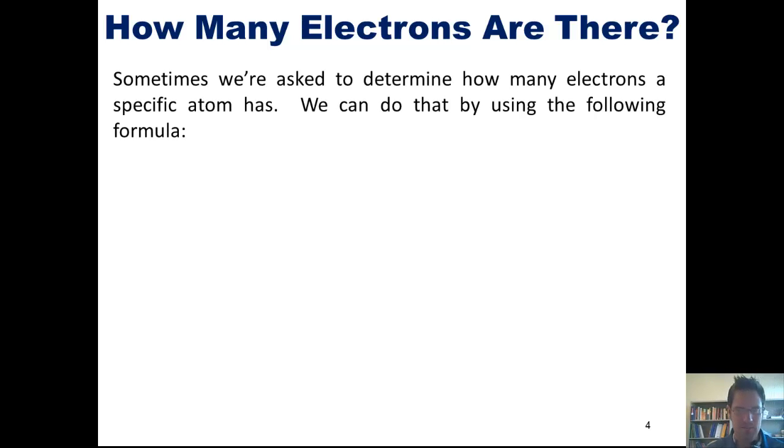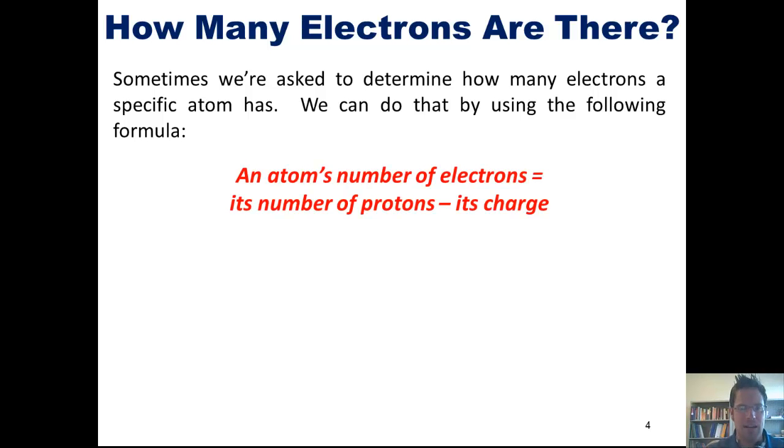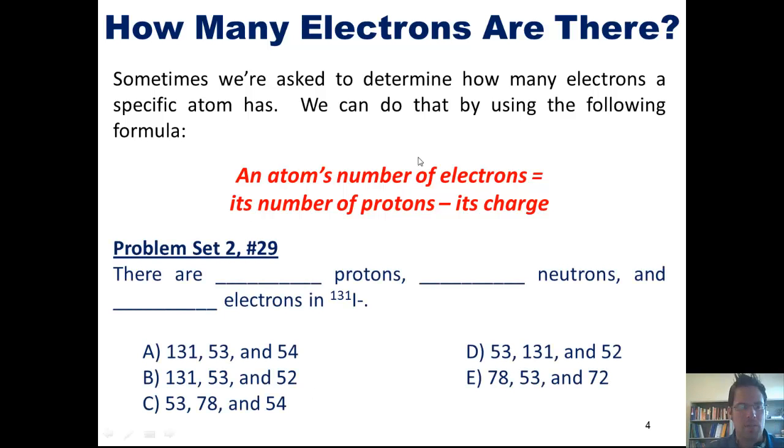First of all, sometimes we're asked to determine how many electrons a specific atom has. We can do that by solving the following formula, an atom's number of electrons equals its number of protons minus its charge. This brings us to one great problem from our problem set. There are blank protons, blank neutrons, and blank electrons in iodide-135.